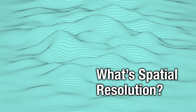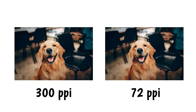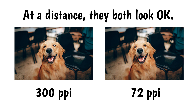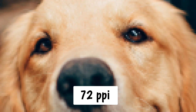If you're new to GIS, you've probably seen the term spatial resolution. You might think of resolution in terms of graphics software like Photoshop. For example, if you have two versions of a photograph — one with a resolution of 300 pixels per inch and the other with a resolution of 72 pixels per inch — the one with a higher resolution will be noticeably sharper. I'll zoom into this photo so you can see the difference.